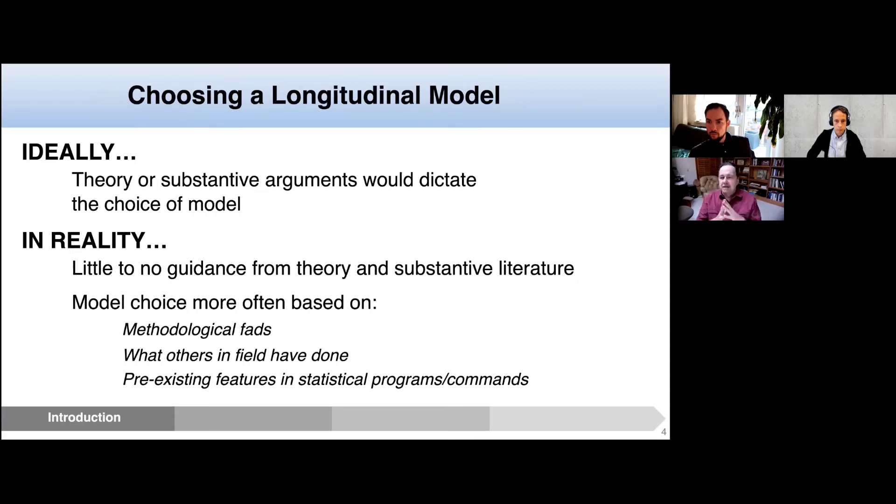Now, what you sometimes get as advice in terms of choosing a longitudinal model is people say, well, what does the theory say? What do the substantive arguments say? That would be great. If we really had theory that was so clear that it said this should be a quadratic growth curve model or this should be a fixed effects model. The fact is, if we're going to be serious and honest about it, there's little to no guidance from the theory and the substantive literature as to the specific model choice that we have.